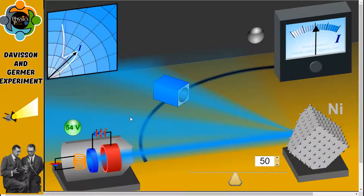An electron gun was taken which comprised a tungsten filament F coated with barium oxide and heated by a low voltage power supply. Electrons emitted from this electron gun were accelerated to a desired velocity by applying a suitable potential difference from a high voltage power supply.